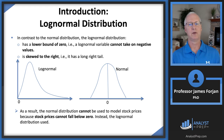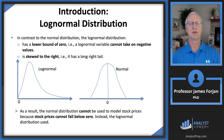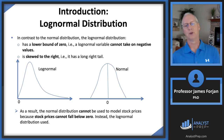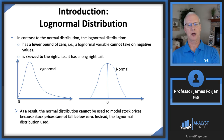The log-normal distribution has a lower bound of zero. Log-normal variables cannot take on negative values, so that rules out stock returns, bond returns, and other asset returns. But it includes prices because, at least in theory, a price is not going to be less than zero. It also has a long right tail. Normal distributions cannot be used to model stock prices because stock prices cannot fall below zero.